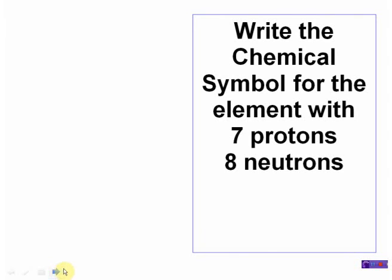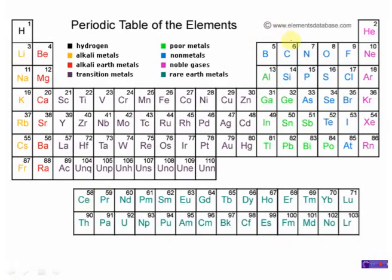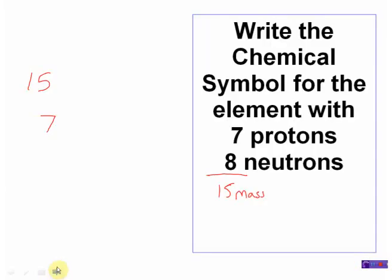Let's write the chemical symbol for an element with seven protons and eight neutrons. Seven is my atomic number — that's my bottom-left number. Adding seven protons plus eight neutrons gives a mass of 15, so 15 is my mass number. Element number seven on the periodic table is nitrogen, symbol N. So the chemical symbol is 15 over 7, nitrogen.